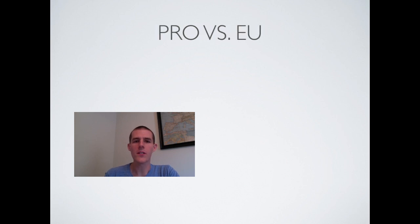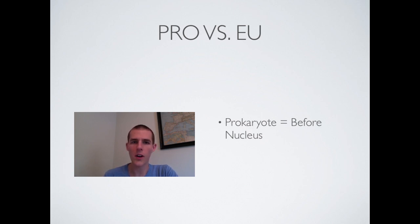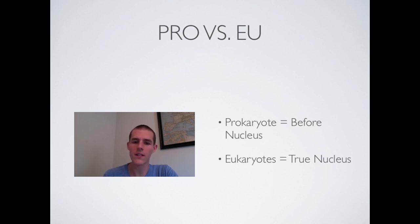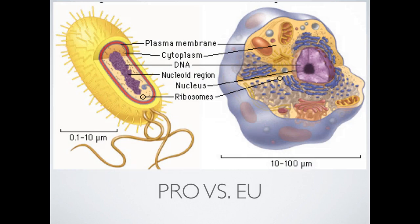Let me talk a little bit about prokaryotes versus eukaryotes — and it always comes down to words in science. The first word is prokaryote. 'Pro' means before, and 'karyote' comes from the Greek 'karyon,' which means seed — in this case, they take it to mean nucleus. So prokaryote literally means 'before nucleus.' Eukaryote means 'true nucleus.' 'Eu,' anytime you see that in science, it means true. So we've got true nucleus.